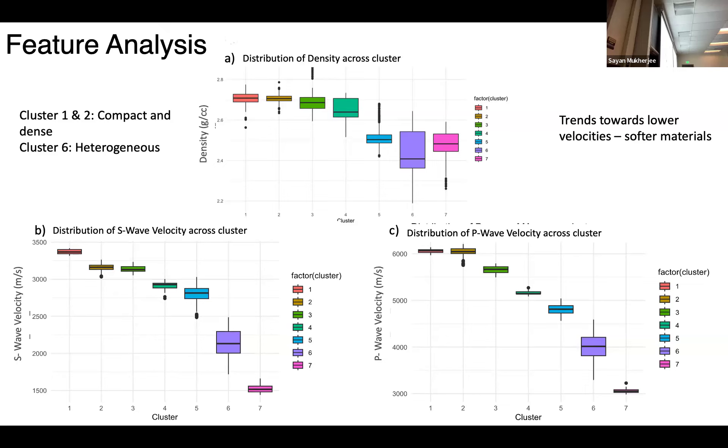That means that the values of S waves and density were closer together, which means that the layer must be homogeneous. Also, we see that the density is higher, the S wave velocity is also higher, and the P wave velocity is also higher, which means that it must be compact or a dense rock.